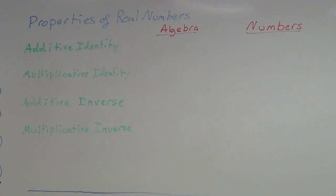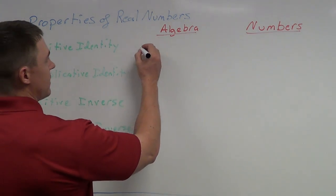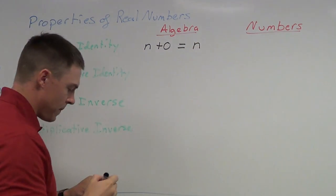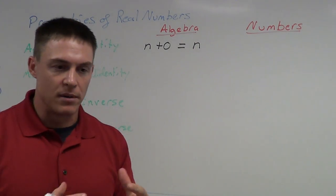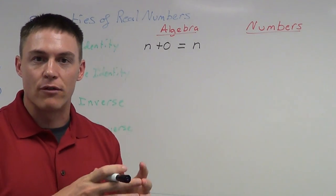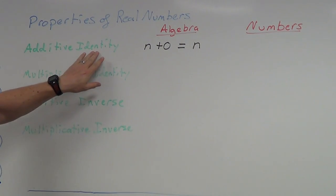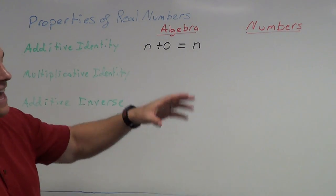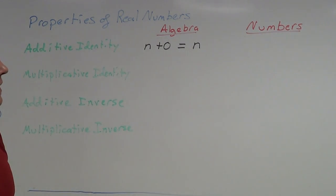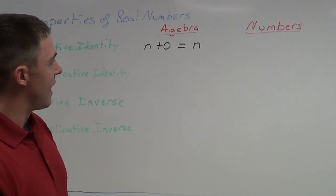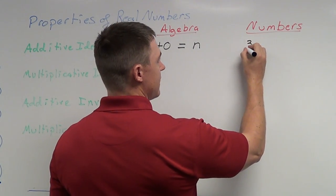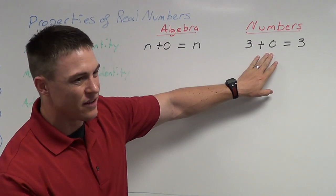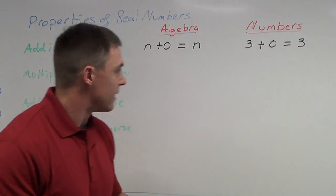The additive identity is first. It's a very basic property: if you have a number plus zero, that's always going to simply equal that number. In mathematics, we always want to define everything, no matter how simple it is. So the additive identity states n plus zero equals n. For example, three plus zero is equal to three — nothing changes, you simply get three.